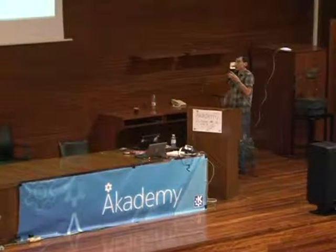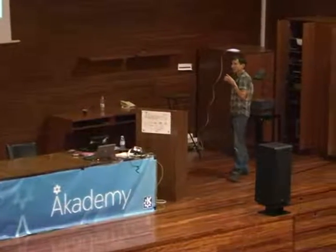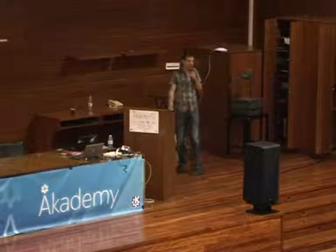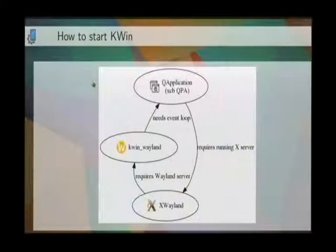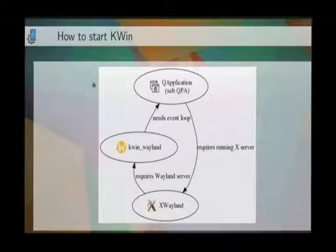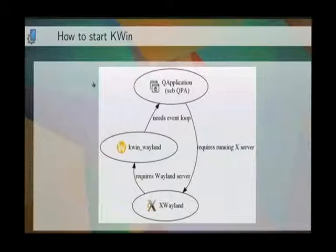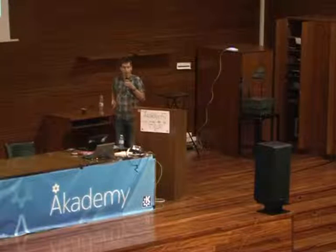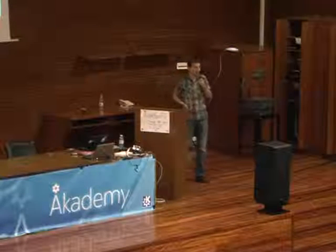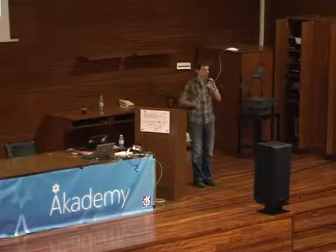The next thing about the evolution I want to talk about is starting our Wayland server. KWin is traditionally an X11 application, which means we use X11 everywhere, and without an X server we can't start. The problem is: in order to start XWayland, we need a Wayland server, which KWin is supposed to be. The Wayland server can only be started once we have an event loop from QApplication. But because KWin needed the XCB QPA plugin, we needed to be on X11 for QApplication. And if you don't have an X server, QApplication just quits. So we had a wonderful dependency loop.